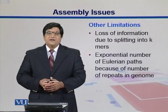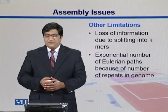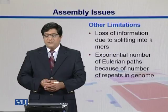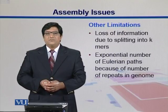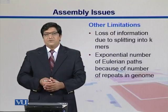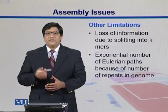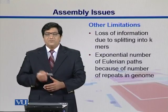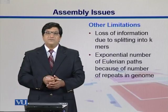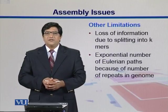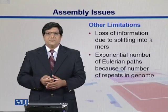In addition to that there are some other limitations. One of them is loss of information due to splitting into k-mers. When you are using those de Bruijn graph assemblies, what we do is take those reads and break them into k-mers. Reads are already short in size and then your k-mers are further shorter, so in this way you might lose some information.